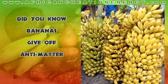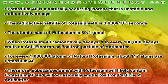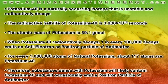Did you know that bananas actually emit anti-matter? It's a fact, and we're going to go over some of the scientific facts that help show how this is possible. Potassium-40 is a naturally occurring isotope that is unstable and radioactively decays. The radioactive half-life of potassium-40 is 3.9 times 10 to the 16th seconds. The atomic mass of potassium is 39.1 grams per mole. When potassium-40 radioactively decays, one in every 100,000 decays emits an anti-electron or positron particle of antimatter. For every 1 million atoms of natural potassium, about 117 atoms are potassium-40. Therefore, substances dense with potassium will likely contain potassium-40 and will occasionally emit a positron particle of antimatter.